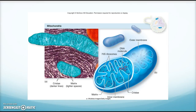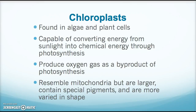All the organelles discussed so far are found in all eukaryotic cells. Chloroplasts, however, are only found in some eukaryotic cells — specifically algae and plant cells. Chloroplasts convert energy from the Sun into chemical energy through photosynthesis, with oxygen as a byproduct. They look similar to mitochondria but are larger and contain special pigments that aid in converting sunlight into energy.